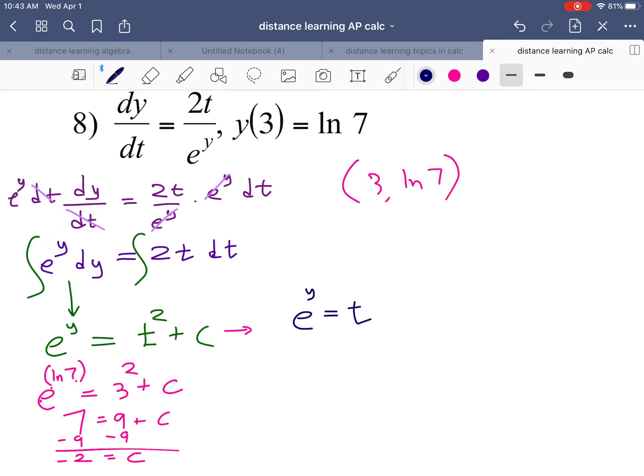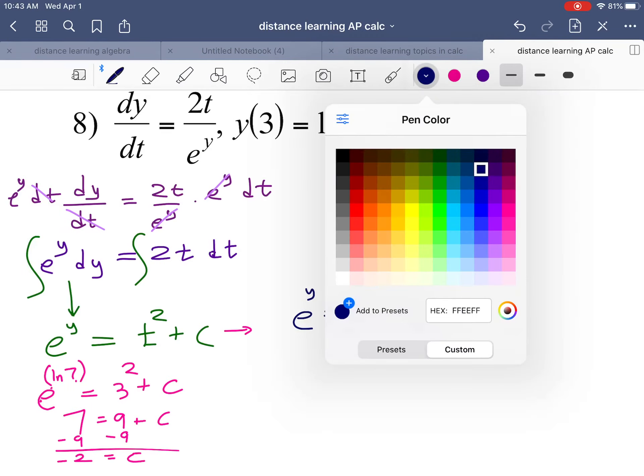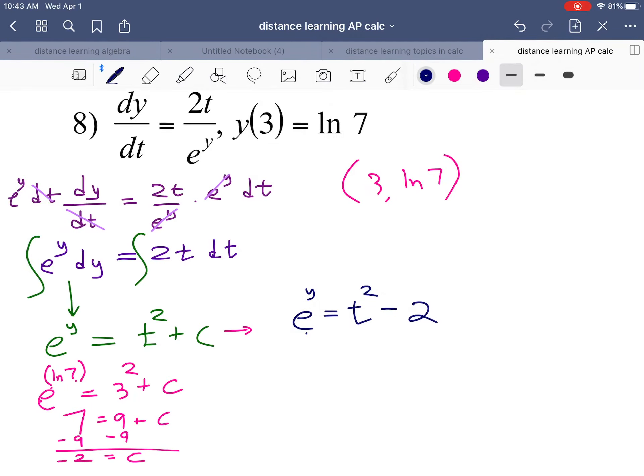e to the y is equal to t squared minus 2. How do I solve? How do I cancel e? I need an ln. And then the ln of e cancel. I get y equals the ln of t squared minus 2.